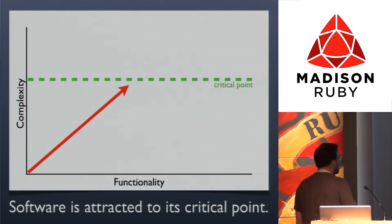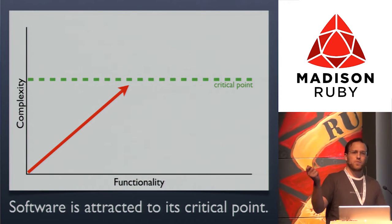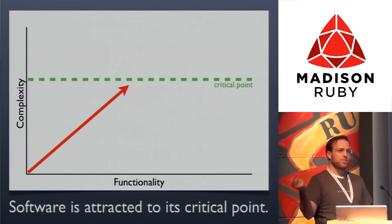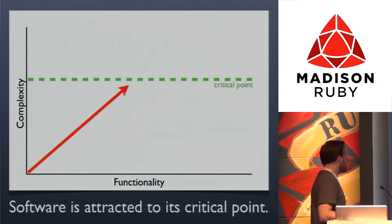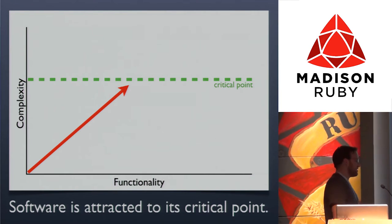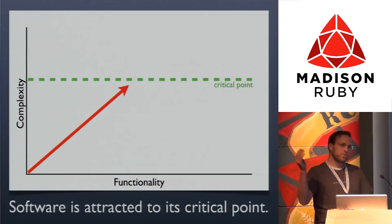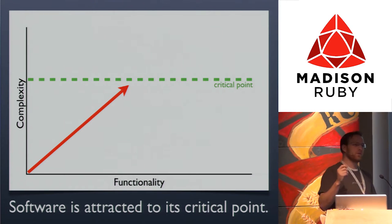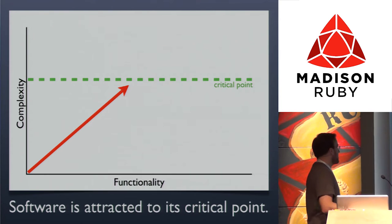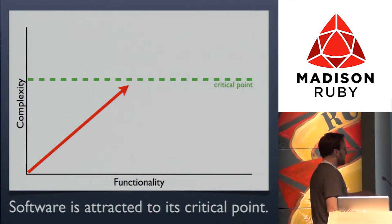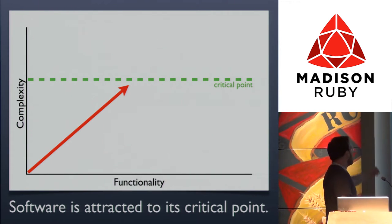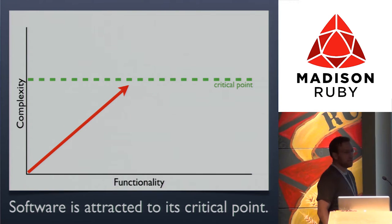In software, software is attracted to this critical point. The point when a sand pile landslides is called its critical point, and software acts the same way. As long as you keep feeding the system—adding changes—you're moving closer and closer to this point where the software has to landslide. I think that's directly related to the functionality we add, the changes, and the increase in complexity.